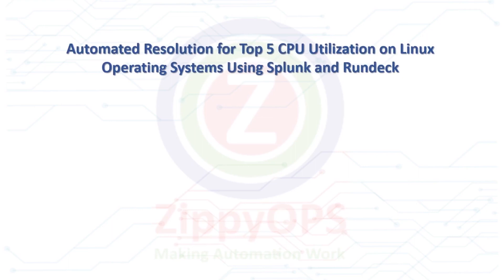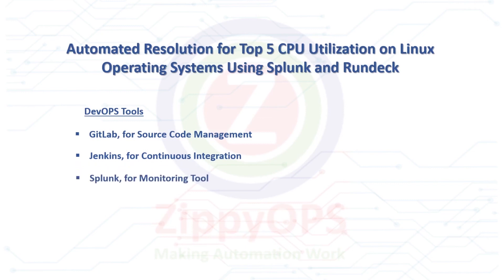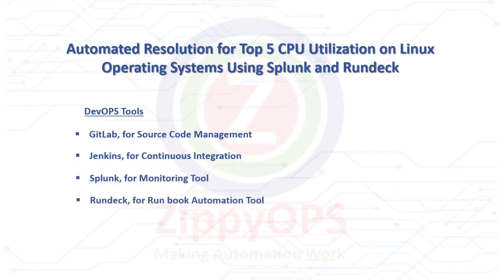The complete process is orchestrated through the Jenkins pipeline. The tools used for this scenario are: GitLab for source code management, Jenkins for continuous integration, Splunk as the monitoring tool, and Rundeck as the runbook automation tool.